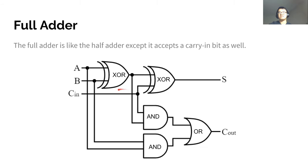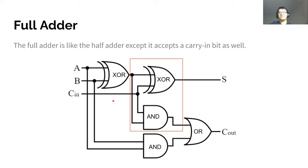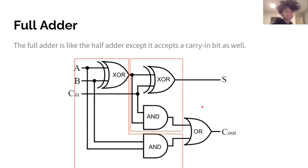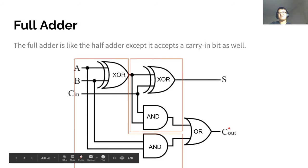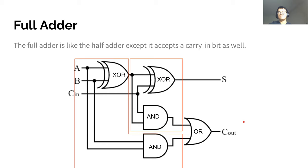The full adder does basically the same thing except it also accepts a carry in bit. The circuit looks more complicated, but it's actually just two half adders put together. You still have your two original inputs and then a carry in input. Essentially A and B get summed together, and then they get summed together with the carry in bit, and then we check if we have any more carries to get the carry out bit.